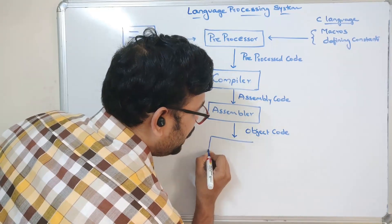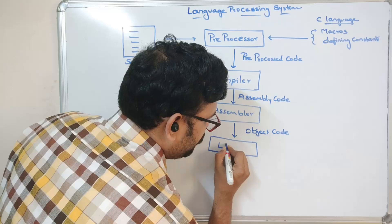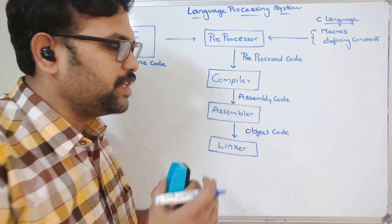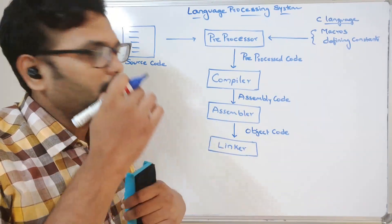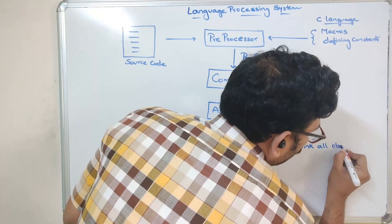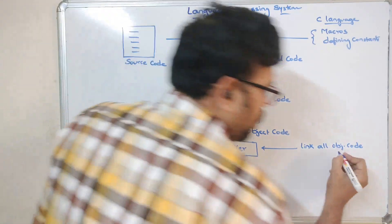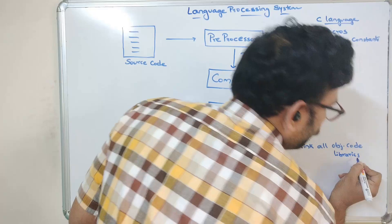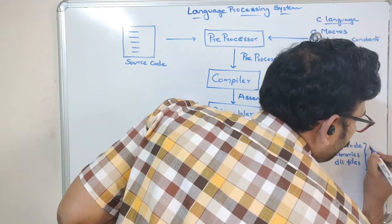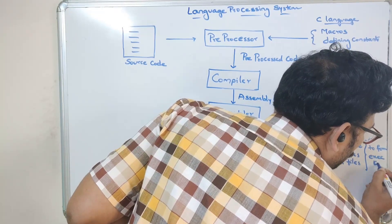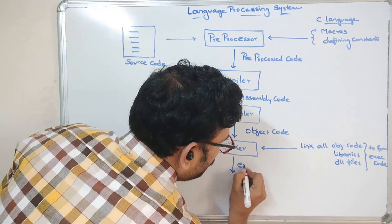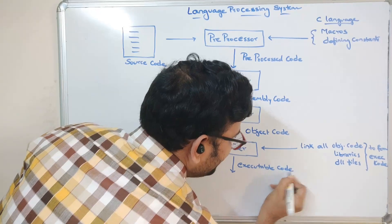This object code will be given to a linker. The linker is a process that links all the DLL files as well as the object codes to form the executable code. If there are multiple object codes, it will link all those codes along with any libraries included in the program. So all those libraries and DLL files will be linked together to form the executable code.